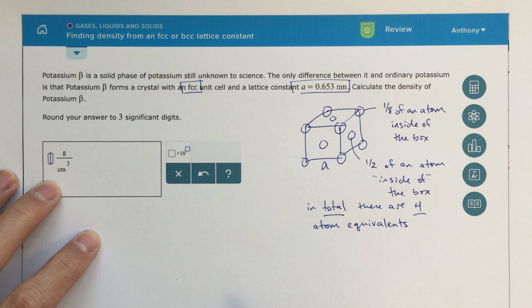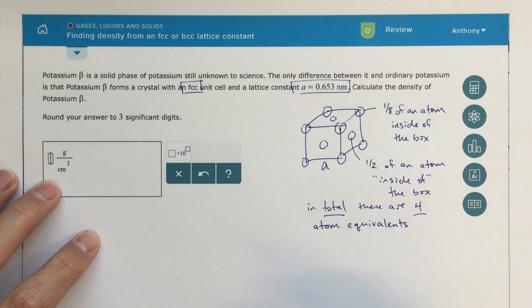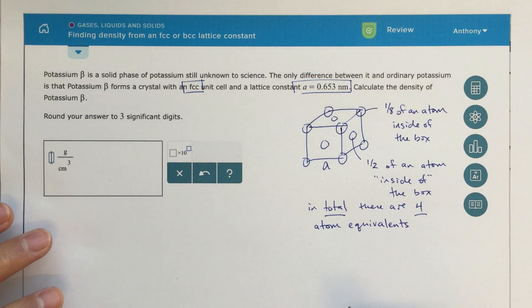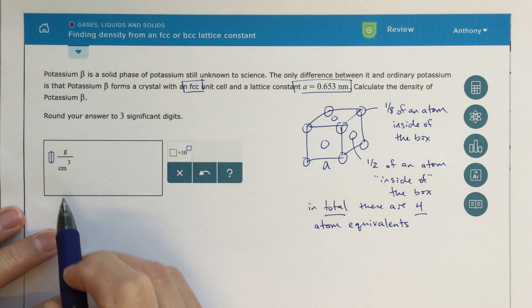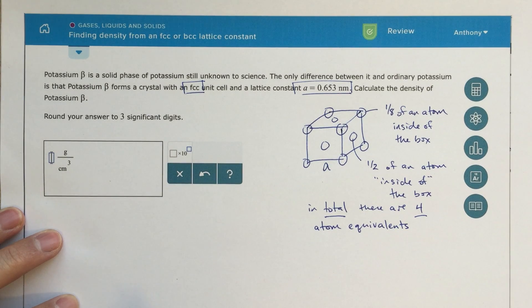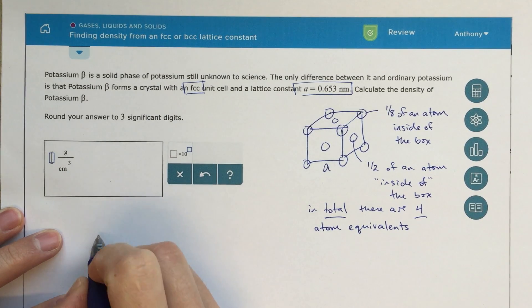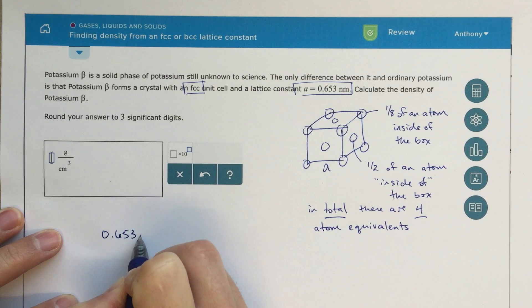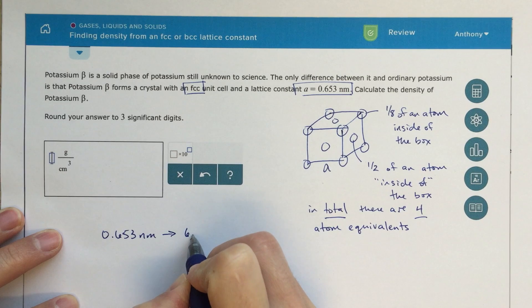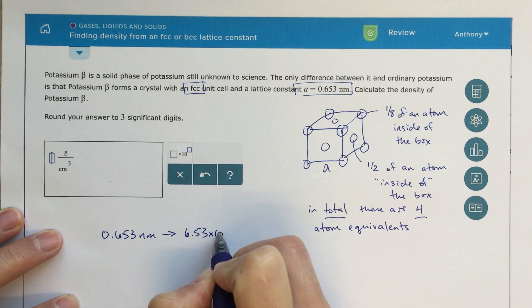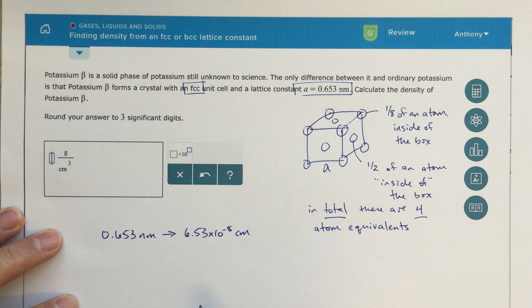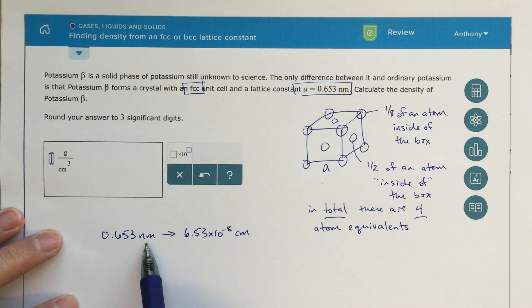Now for this lattice constant, we're going to use that to figure out our volume. If this alpha value is 0.653, well, I see that my density is given in centimeters cubed. So the first thing I'm going to do is convert nanometers to centimeters. 0.653 nanometers equals 6.53 times 10 to the minus 8th centimeters. There's really two good ways to do this. The first one is just to type it into Google. When I was doing this problem, that's literally what I did. I typed 0.653 nanometers to centimeters, and Google told me that this is the right answer.